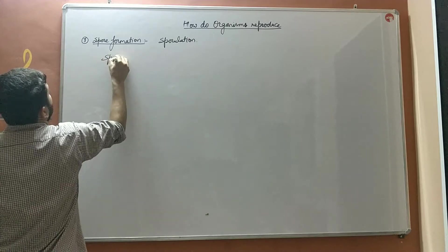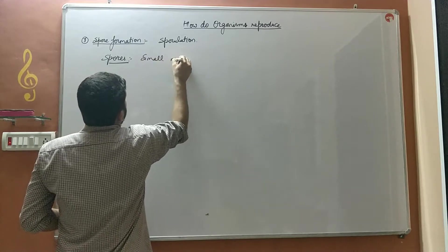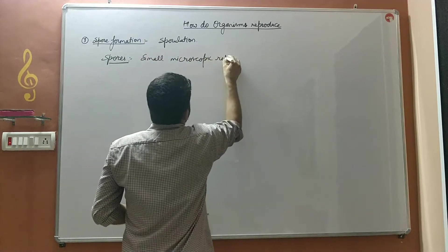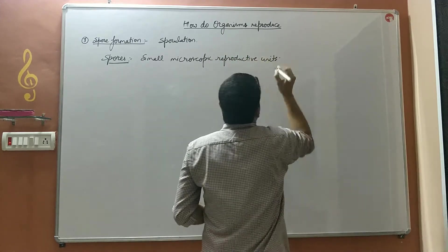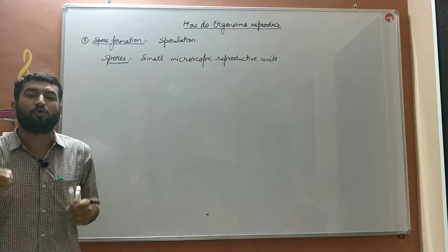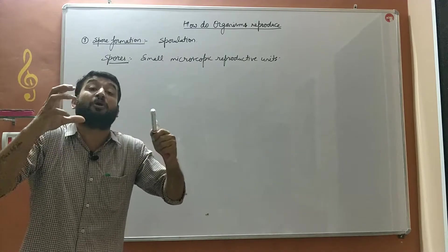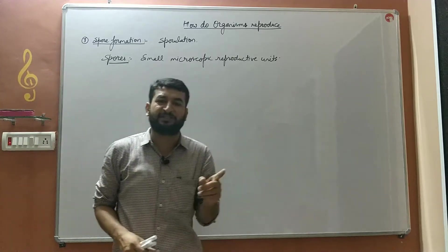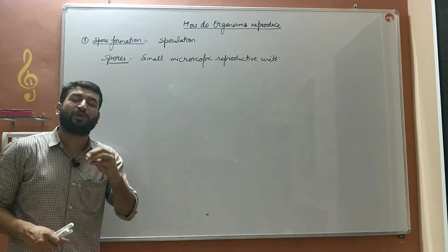First we will discuss what are spores. Spores are small or tiny microscopic reproductive units which are formed and possess a hard protective coat which protects the young one which is to be born yet. These are small microscopic reproductive units which have a hard protective covering over it, that is known as spores.